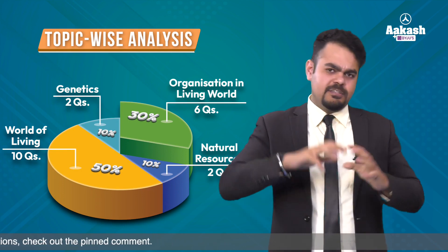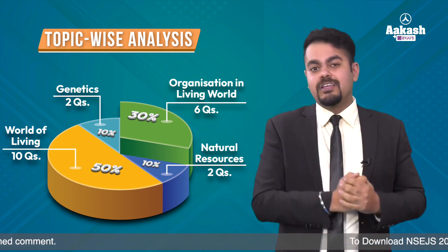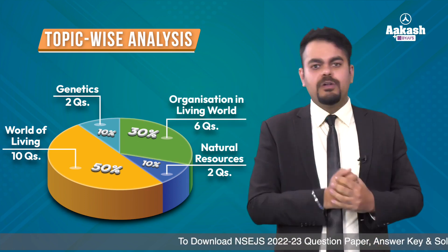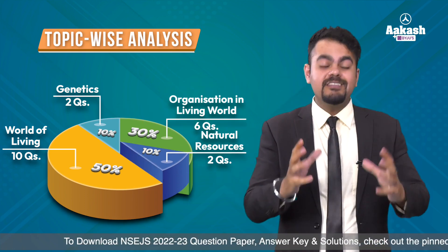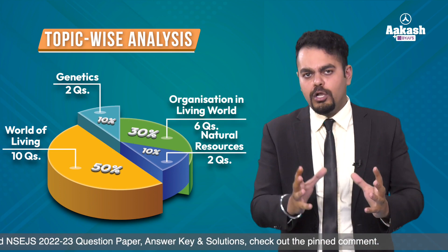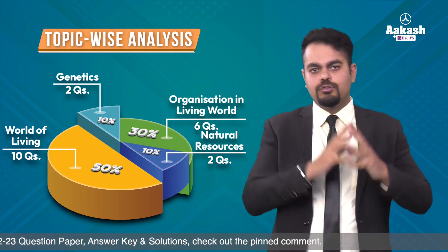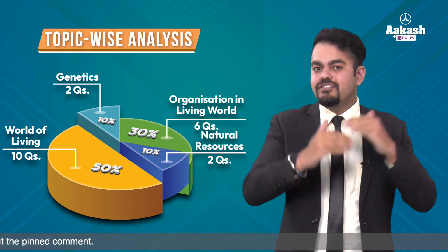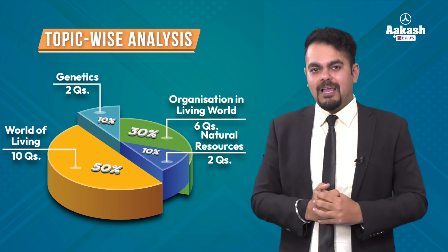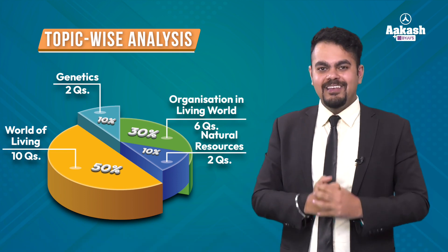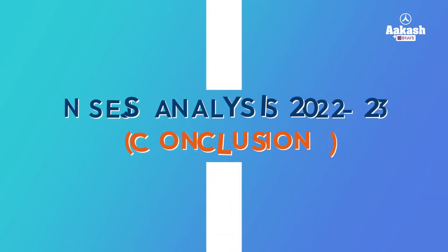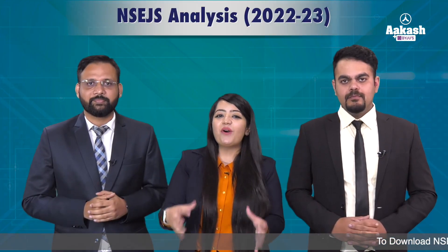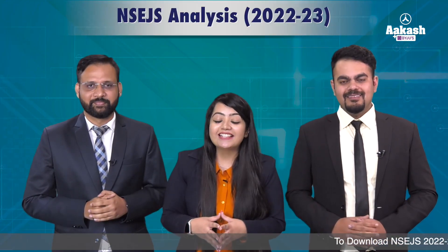The second most important unit was 'Organisation in the Living World,' which had 30 percent of the questions — that is 6 questions. The remaining two smaller units were Natural Resources and Genetics, each contributing around 10 percent of the questions. That concludes the biology analysis.